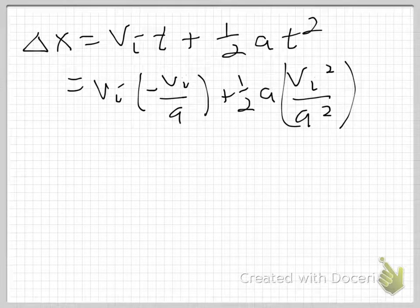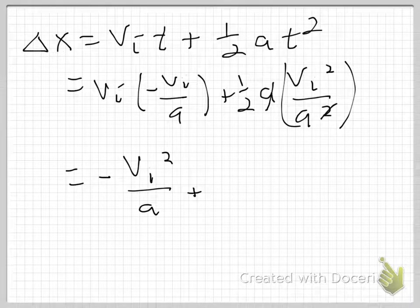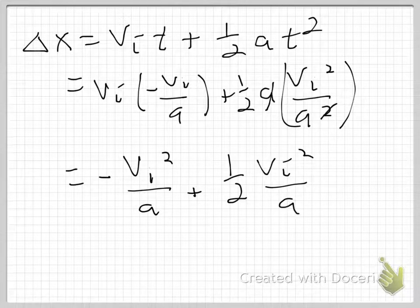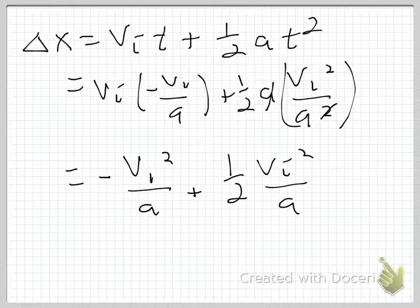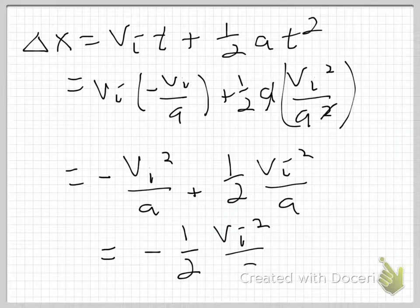There's an A in the numerator that cancels with one of the A's in the denominator. What I get out of this is negative V_initial squared over A, plus one-half V_initial squared over A. Negative something plus one-half of that something gives negative one-half of that something. So this works out to be negative one-half V_initial squared over A.